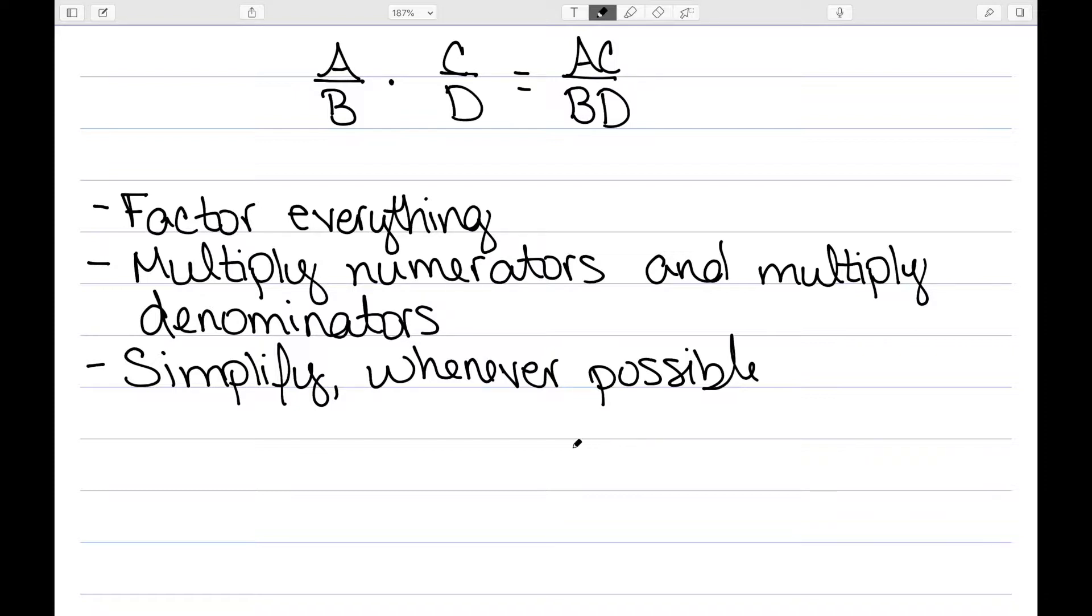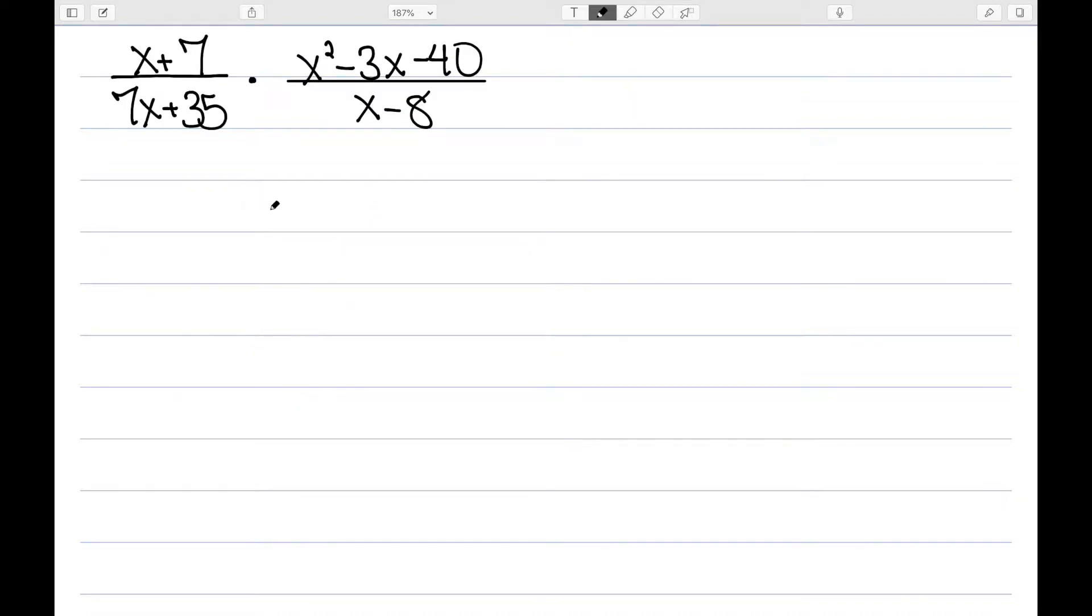Let's look at some examples of multiplying. Here I have my first example. Like I said, the first step is to factor everything. The numerator of the first one will not factor. For the denominator, we can see they have a 7 in common. When we pull that out, we're left with x plus 5.